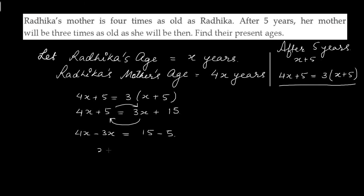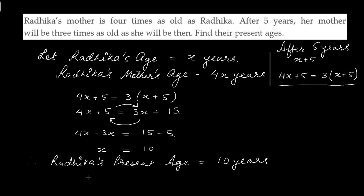This gives us X equal to 15 minus 5, which is 10. Therefore, Radhika's present age is equal to 10 years. And her mother's age will be 4 times Radhika's age, that is 4 into 10, equal to 40 years.